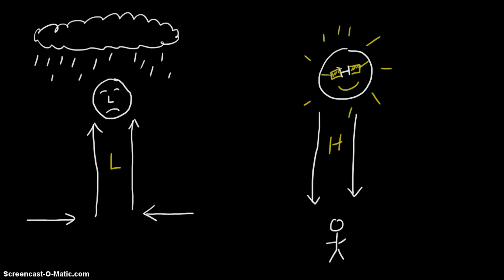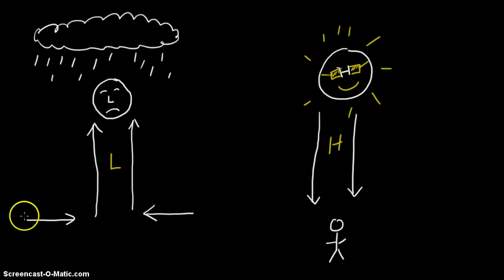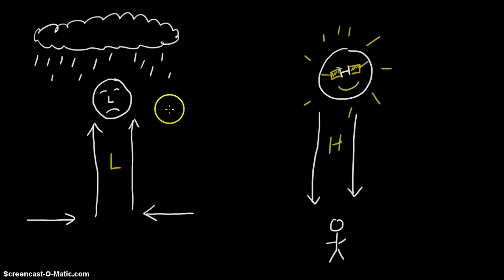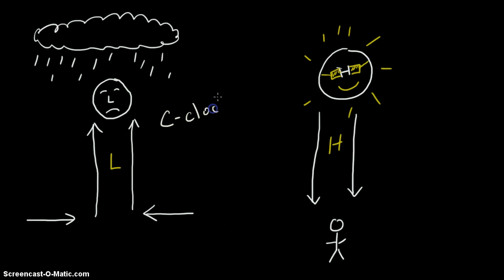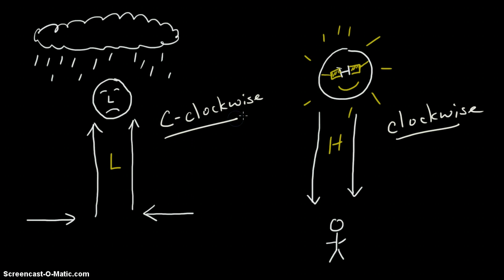Another aspect is how these pressure systems rotate because of the Coriolis effect. In the northern hemisphere, the low pressure systems rotate counterclockwise, and the high pressure system rotates clockwise. But that is a topic for another video.